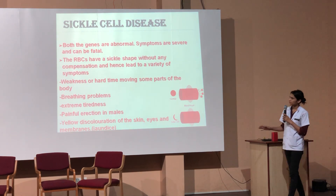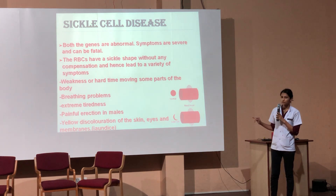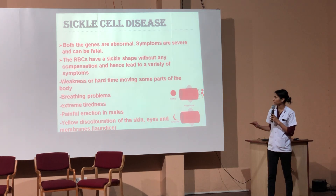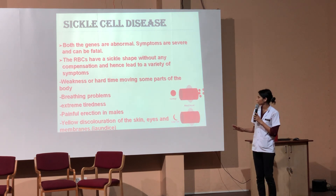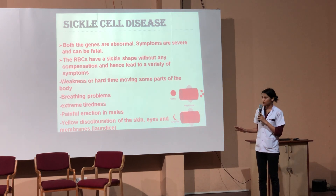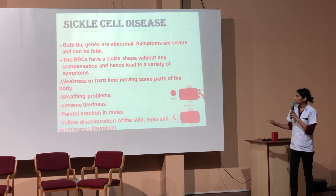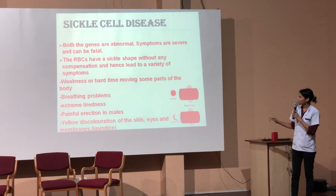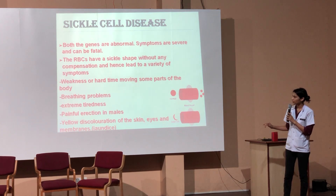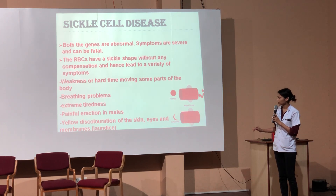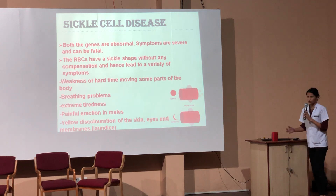In sickle cell disease, both genes are abnormal, and so the symptoms are severe and painful. The RBCs have a sickle shape without any compensation from a normal gene, leading to a variety of symptoms: weakness or difficulty moving some parts of the body, breathing problems, extreme tiredness, painful erection in males, and yellowish discoloration of the skin, eyes, and mucous membranes, which is jaundice.